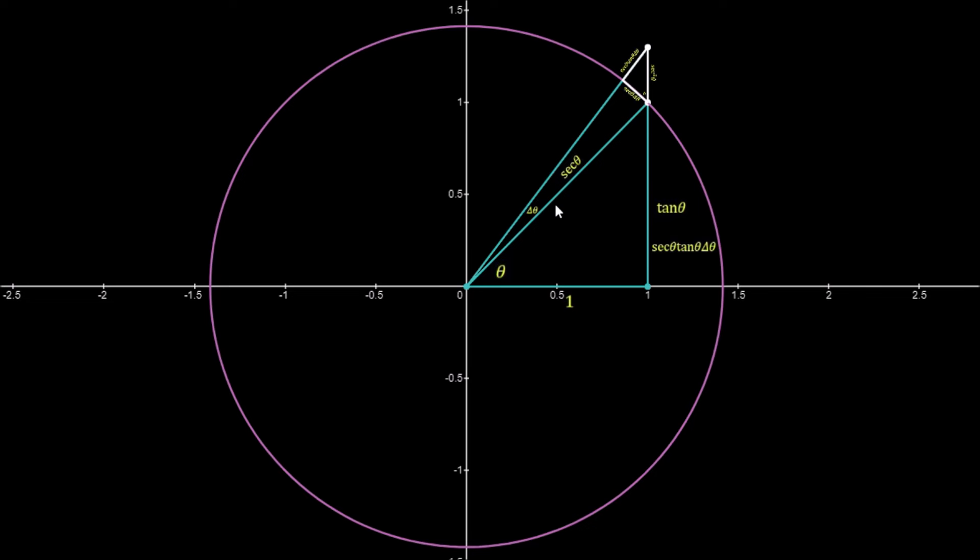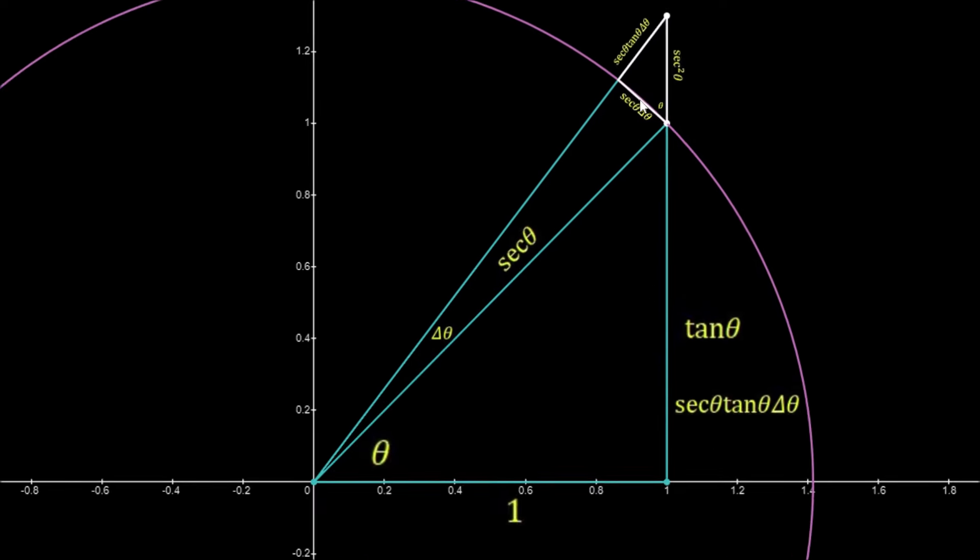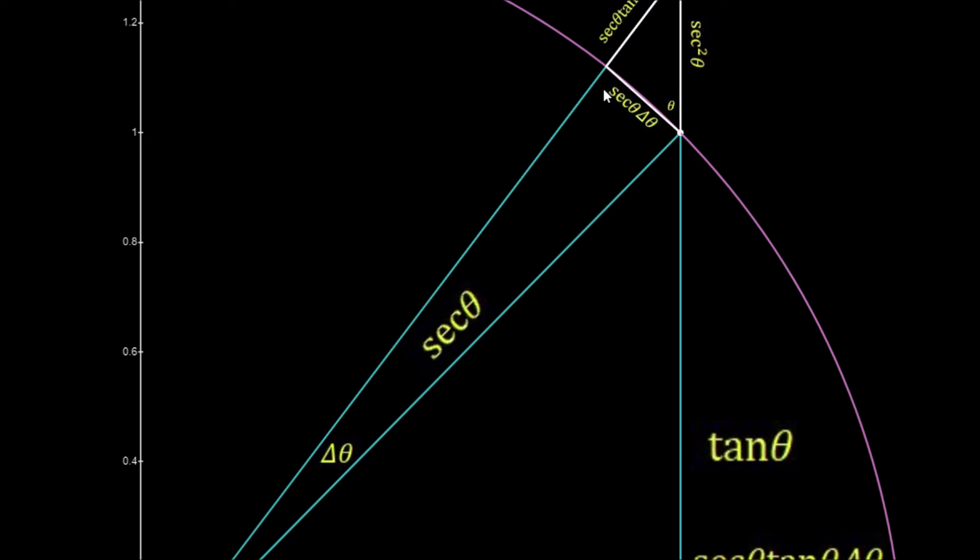Whenever this tended towards 0, then this little white triangle here tended towards a similar triangle here in blue. And this happened because the length of the segment here tended towards the tangent at this point.